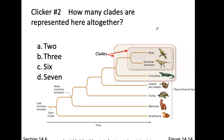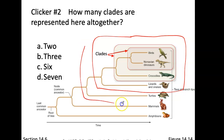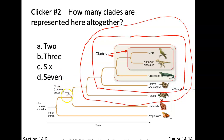How many clades are represented here altogether? Pause the video and think about it. This is one clade — they showed us two already. Enlarging to the next gives three, then four, then five, and six. The correct answer is six.